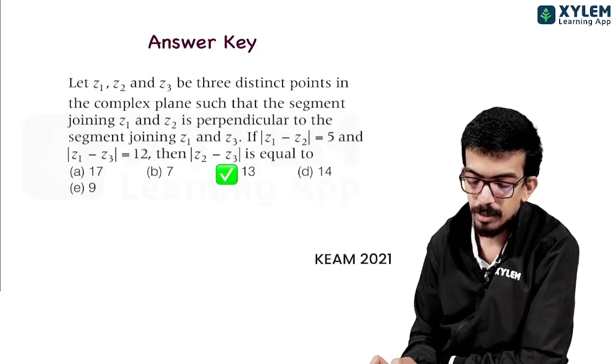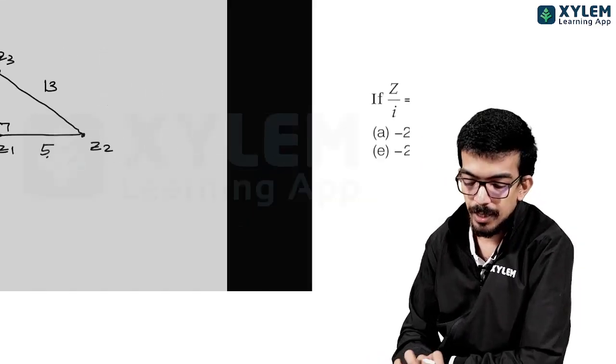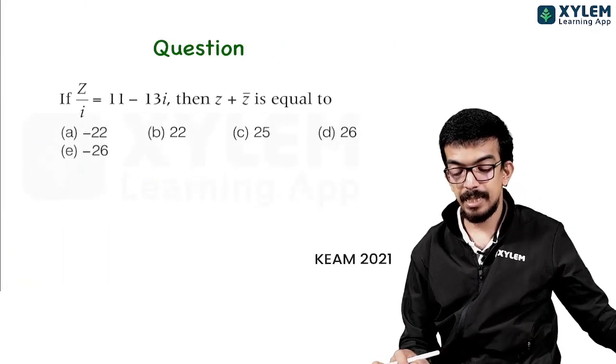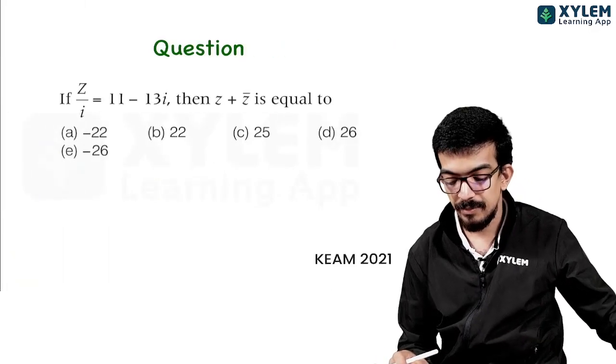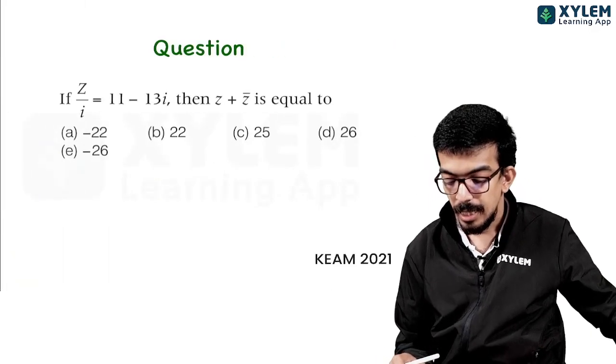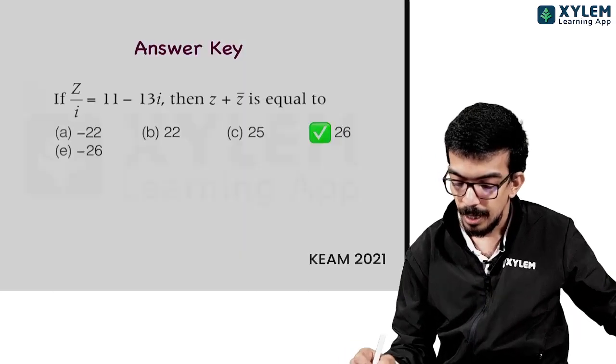Simple question — this is the geometrical meaning, it's a right angle. Next: Z1 is equal to 11 minus 13i, then Z plus Z-bar is equal to?